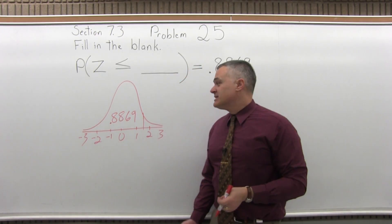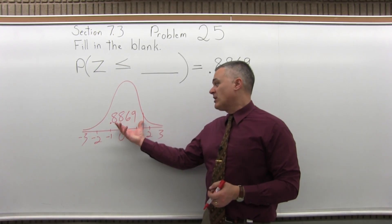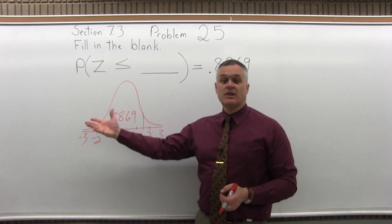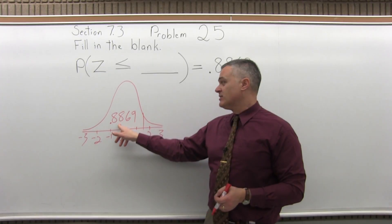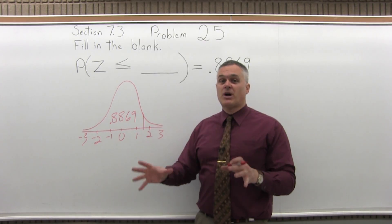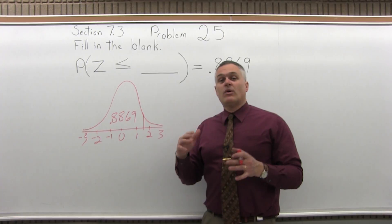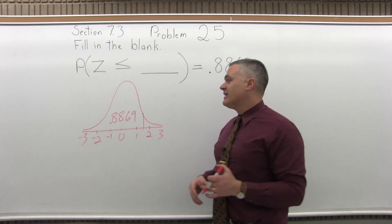Now the way the chart works is it's set up to tell you the probability of what's less than or to the left of what you look up. So what I need to do is find .8869 in the middle part of the chart and see what row and what column I had to look in to find that value.